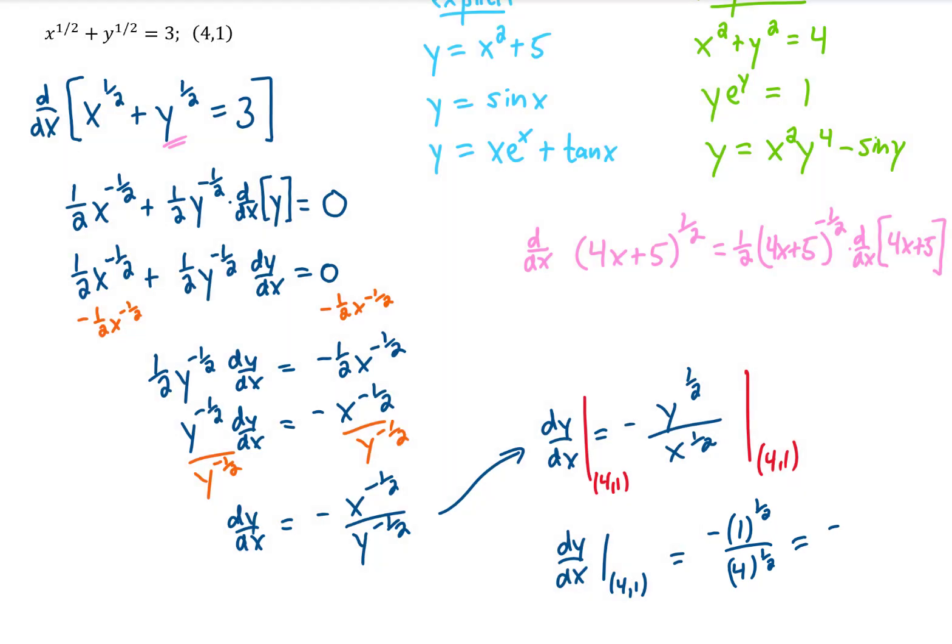And recalling that a 1/2 power is the same thing as a square root, we can take the square root of 1 in the numerator and just get 1. We can take the square root of 4 in the denominator and get 2. And we get a final answer that the slope of our tangent line of this relation up here at the point (4, 1) is negative 1/2.